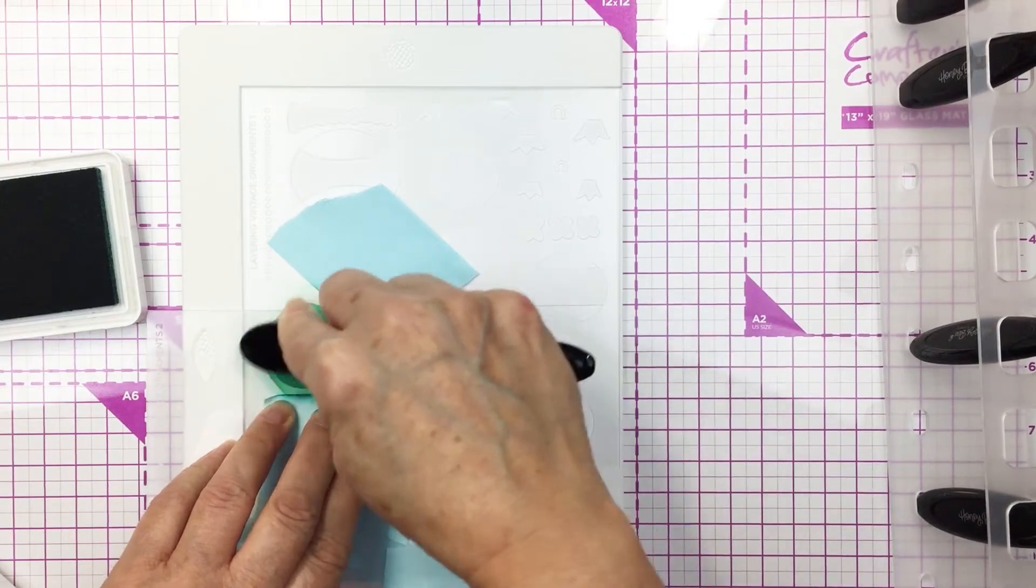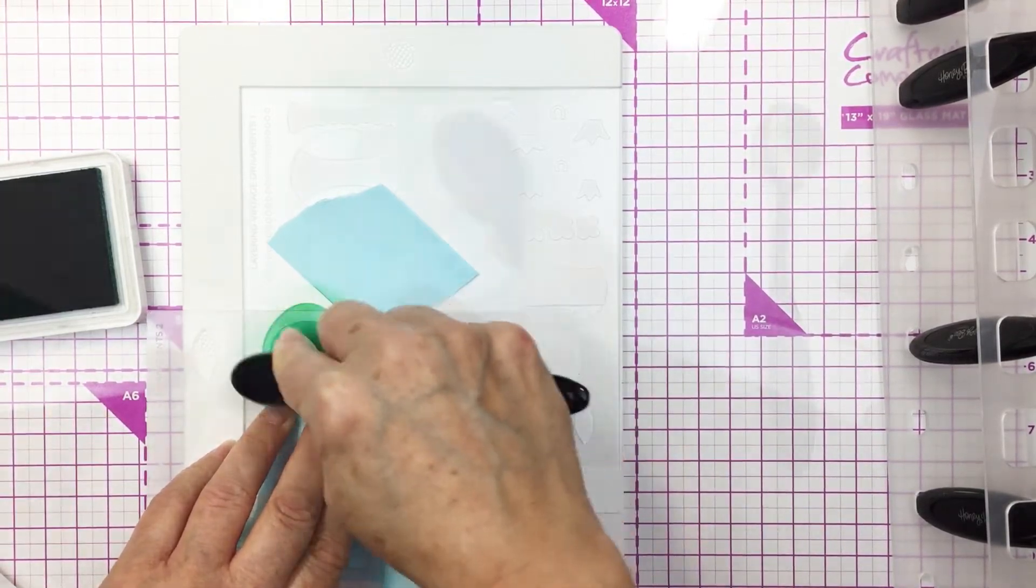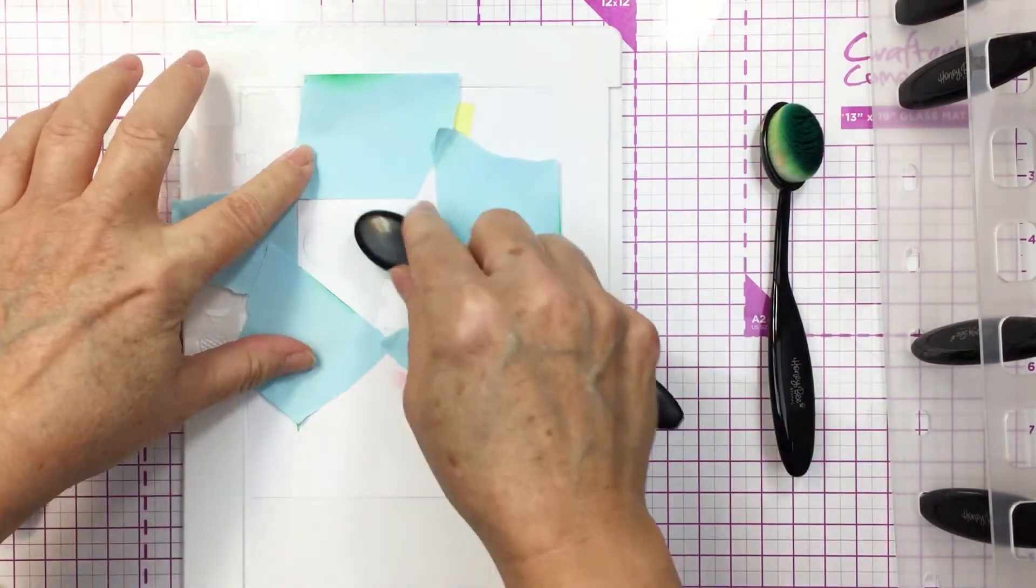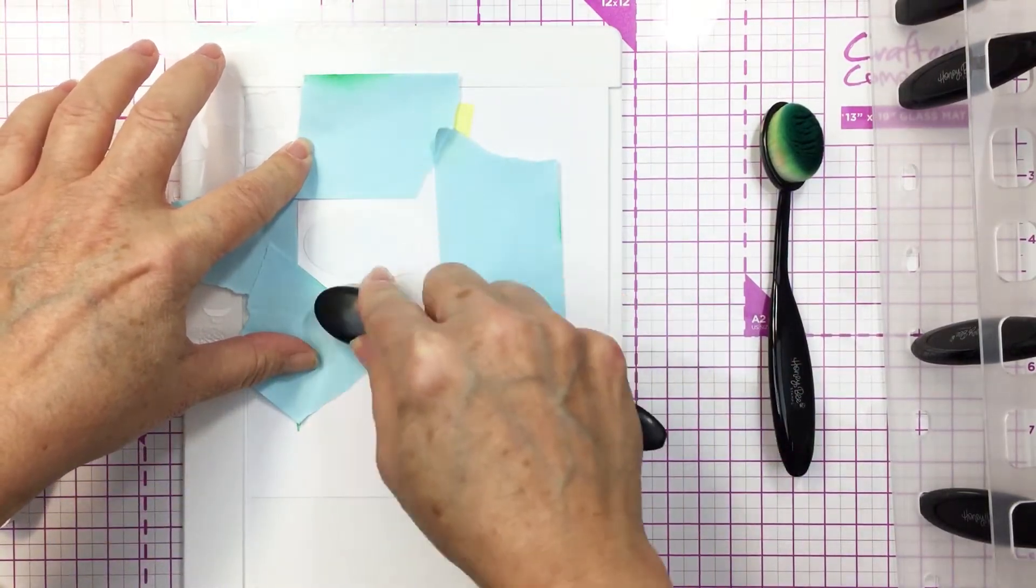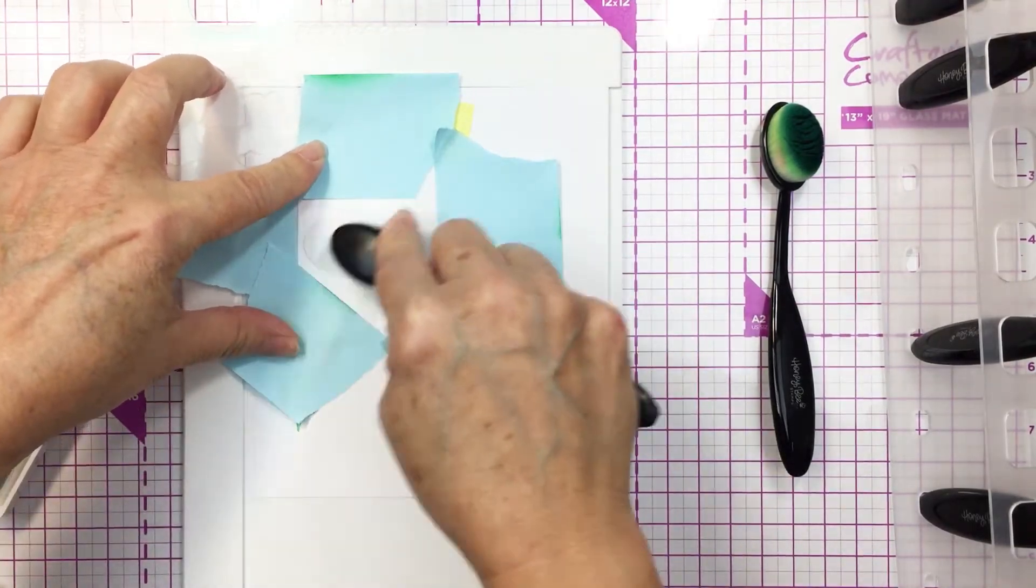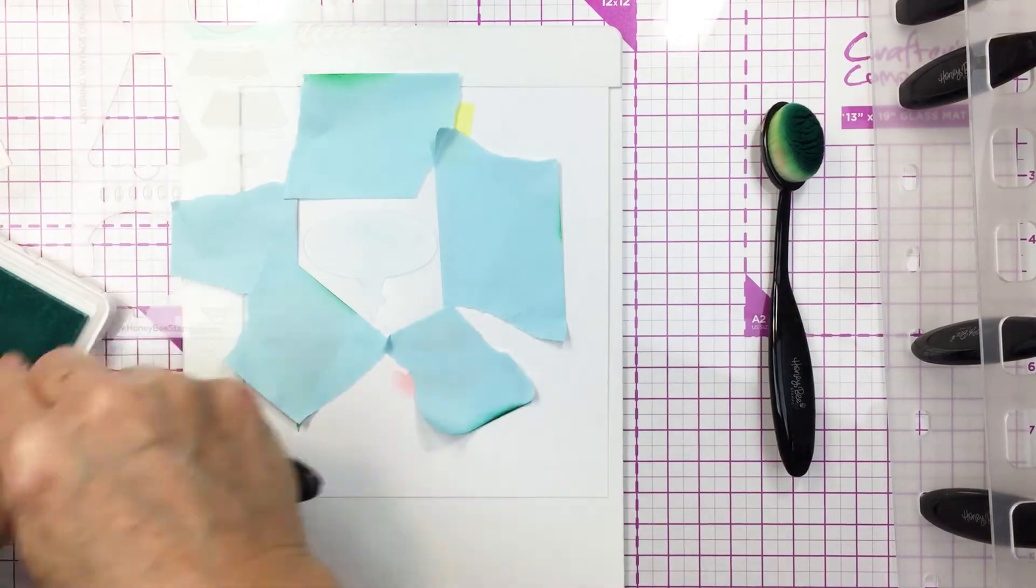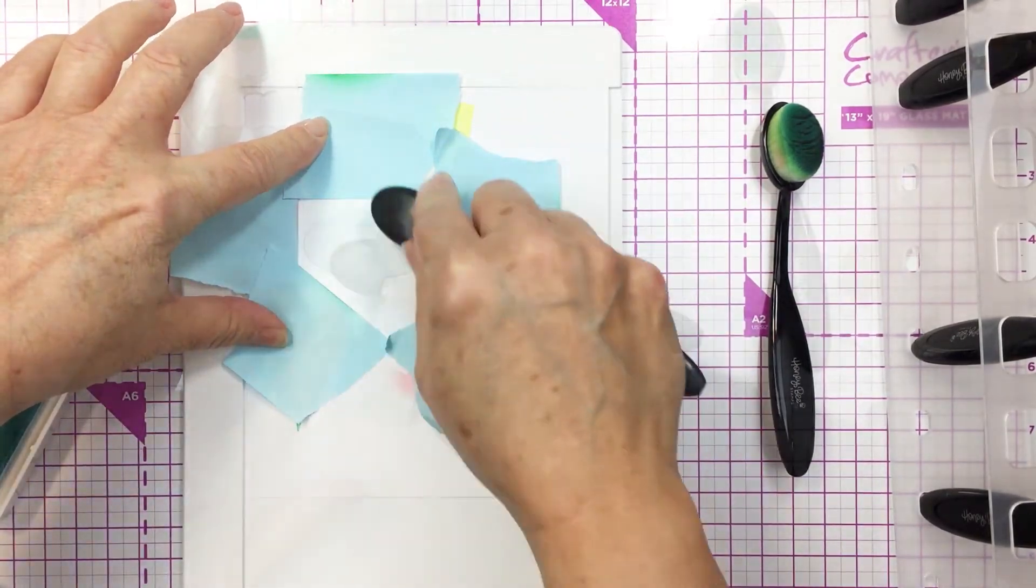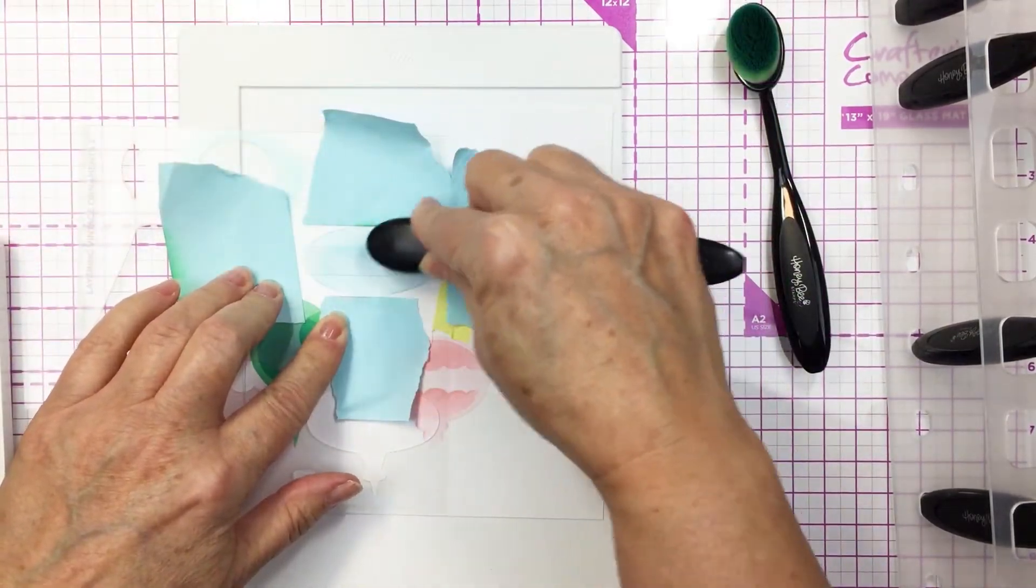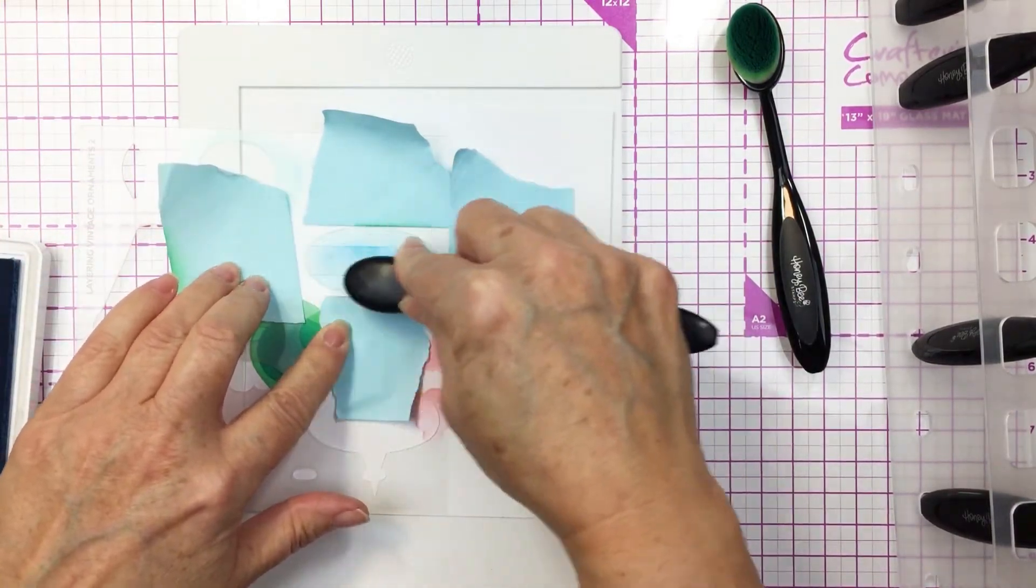Now I'm moving on to the next area and I'm using the low tack tape there just to tape off the other open areas on the stencil so that I don't end up over blending into an open area that I don't want ink in. Now you can see again I've added that initial ornament layer.